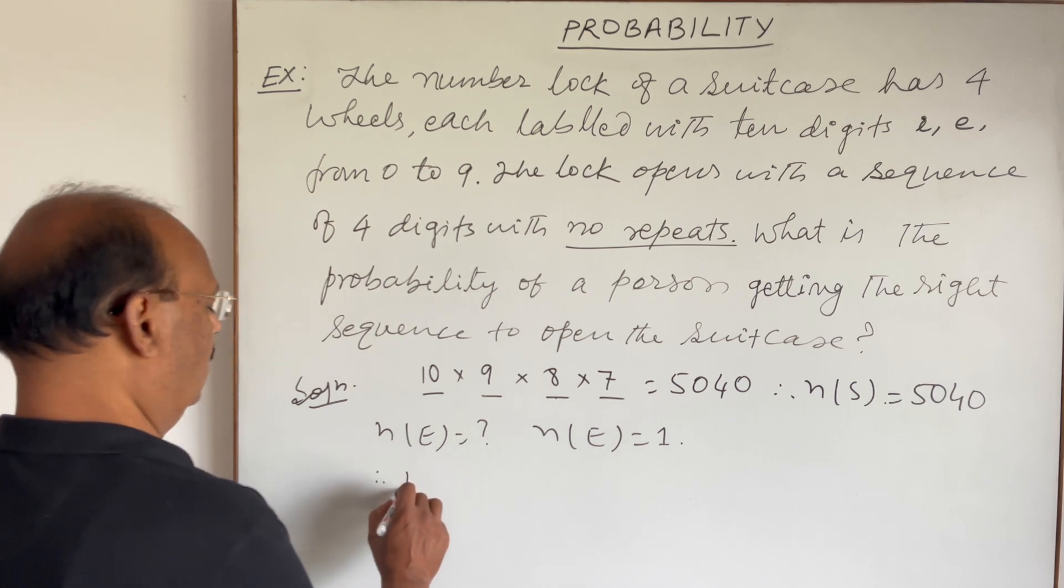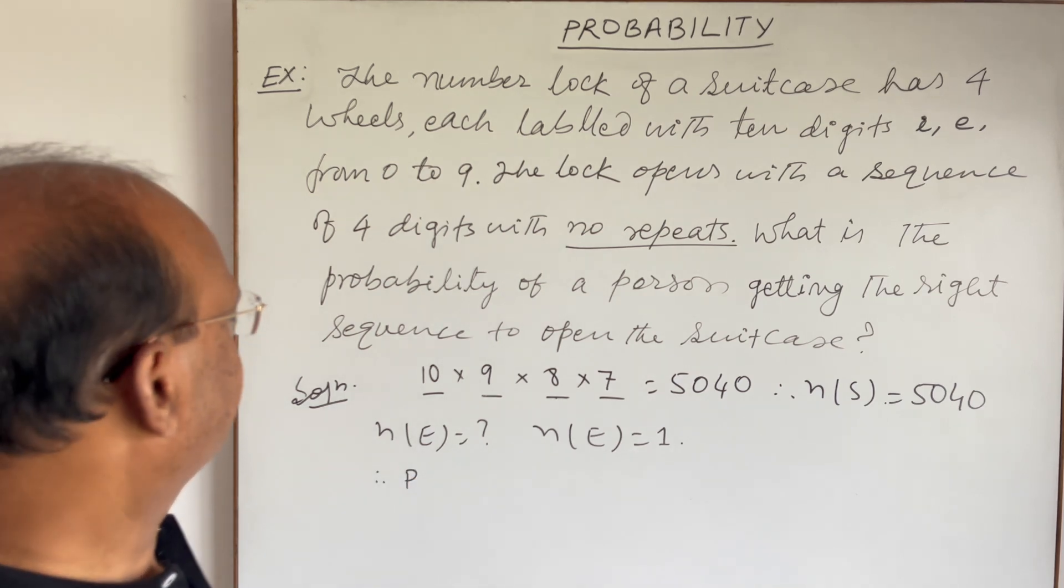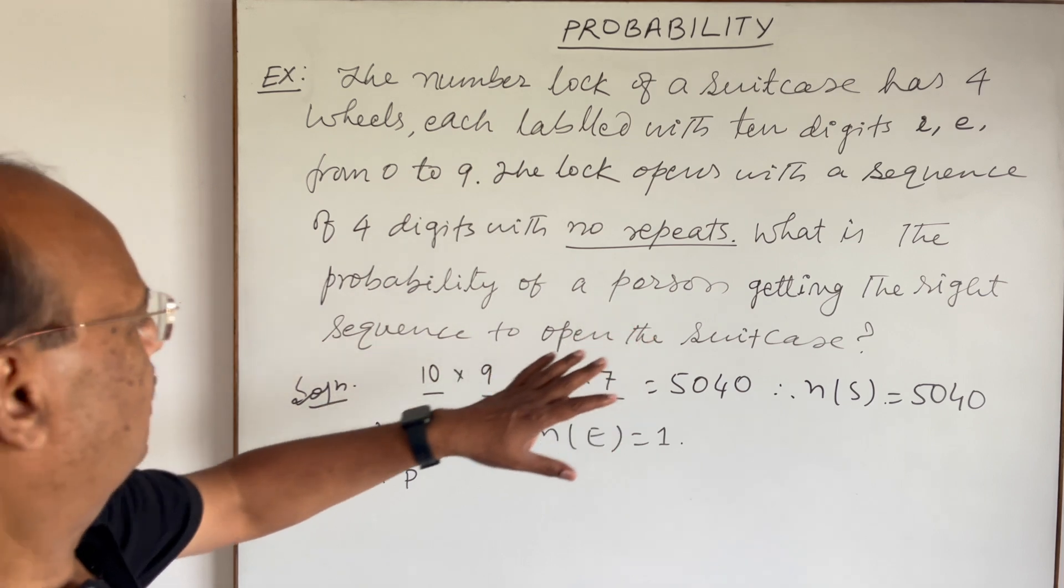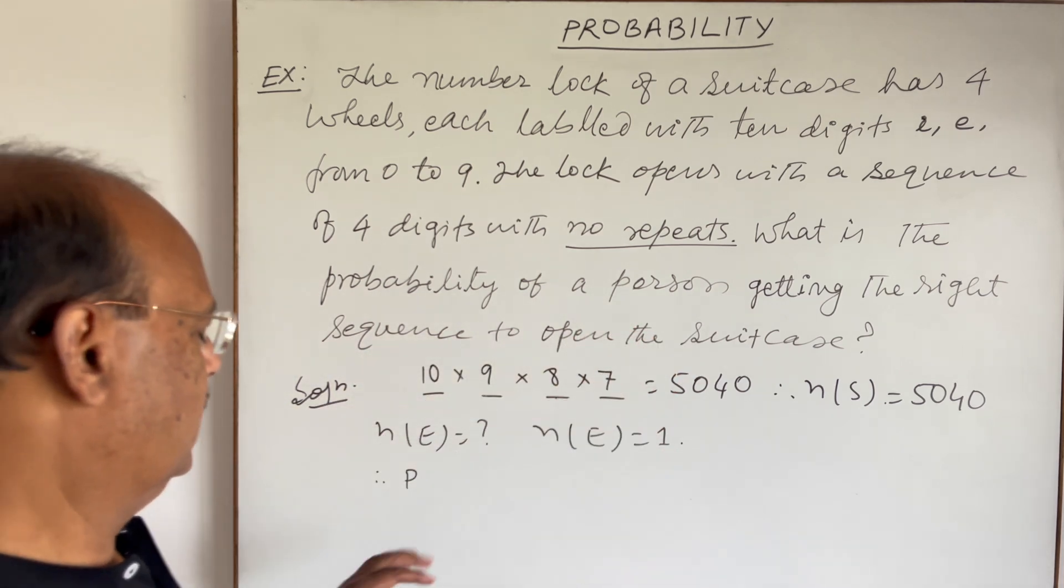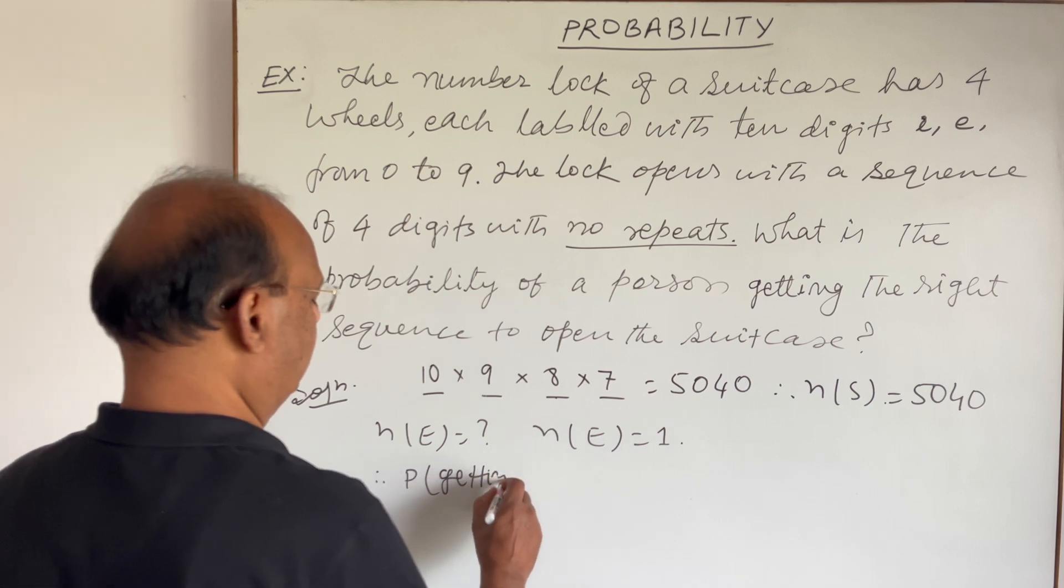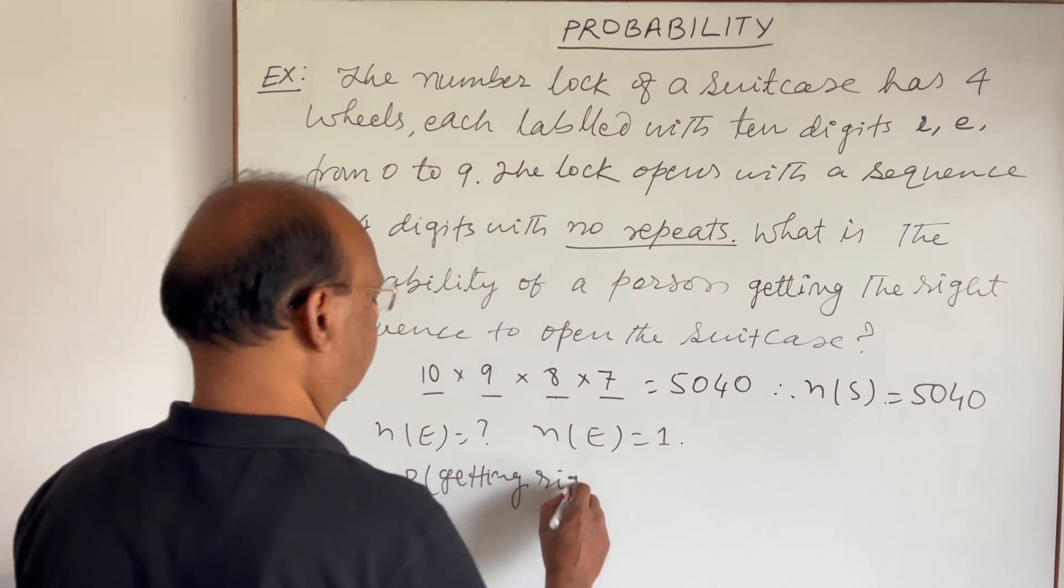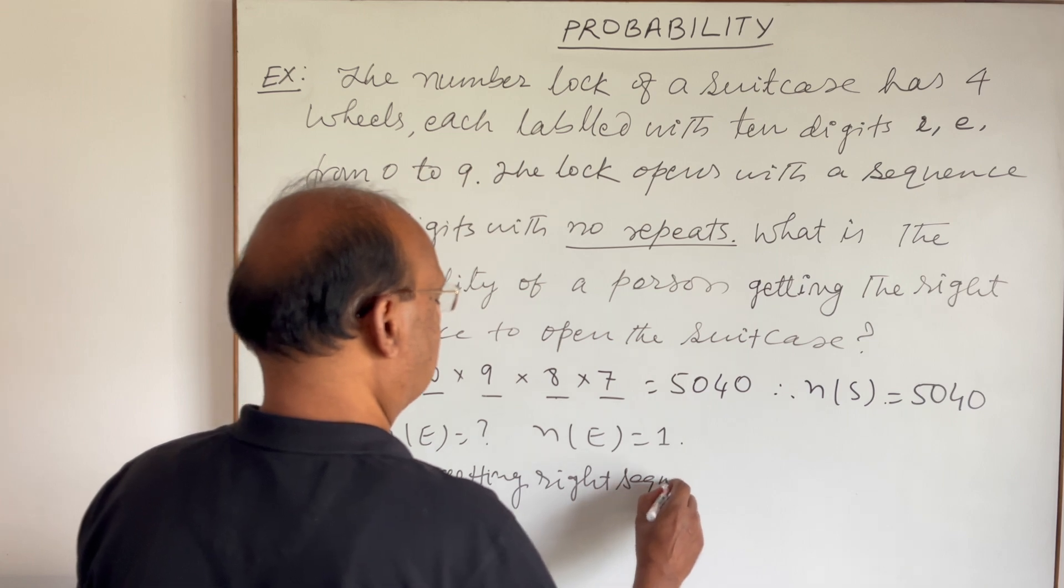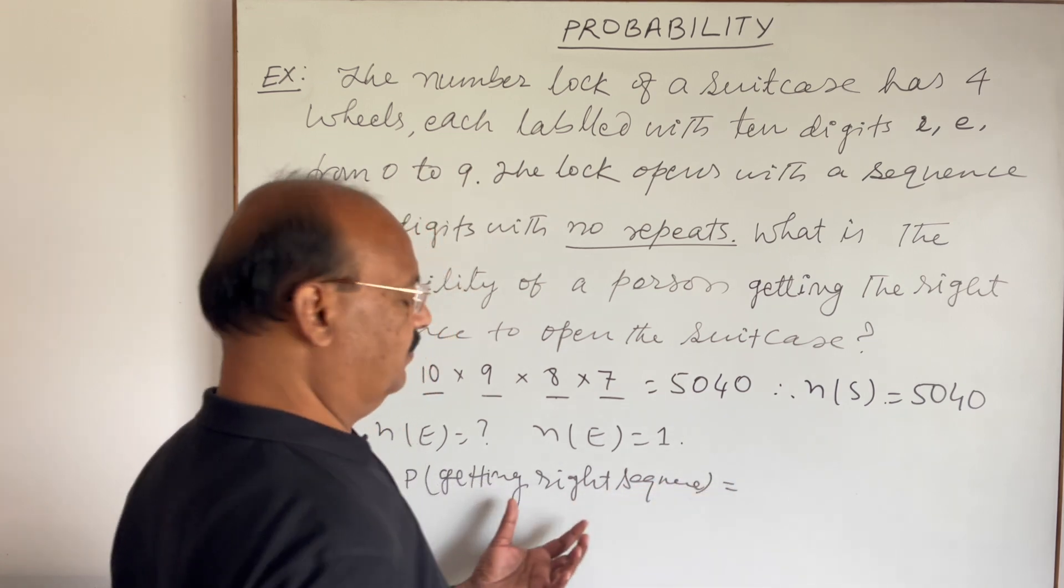So therefore, we have to find here the probability of getting the right sequence to open the suitcase. As we know, probability of E, probability of any event, is equal to n(E) divided by n(S).